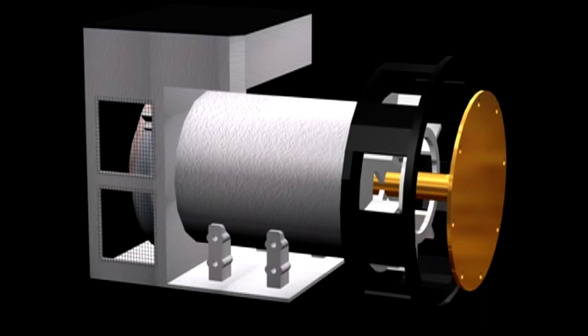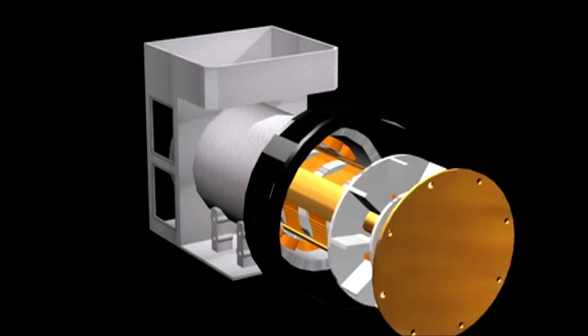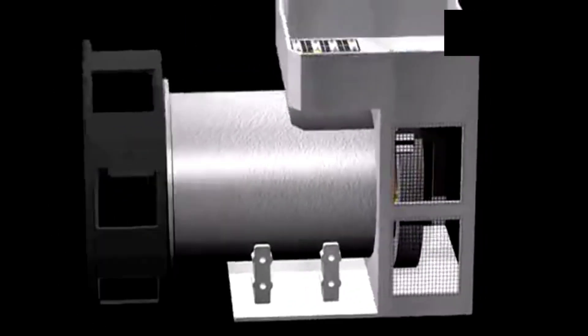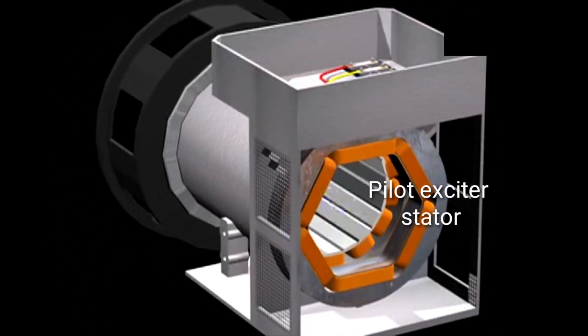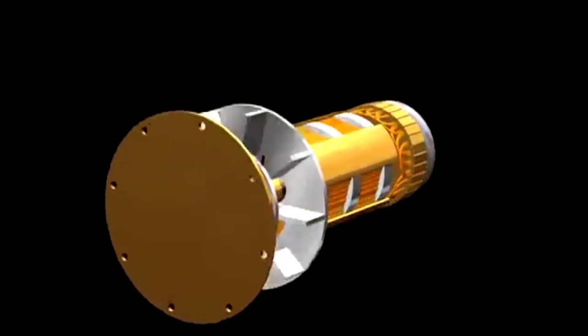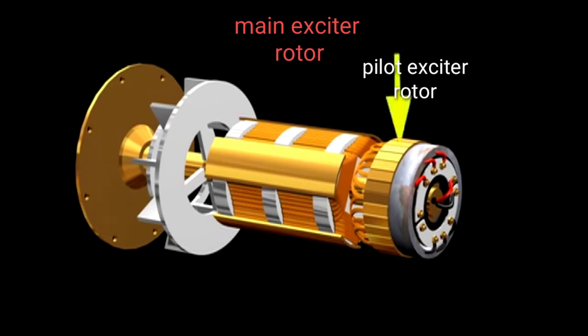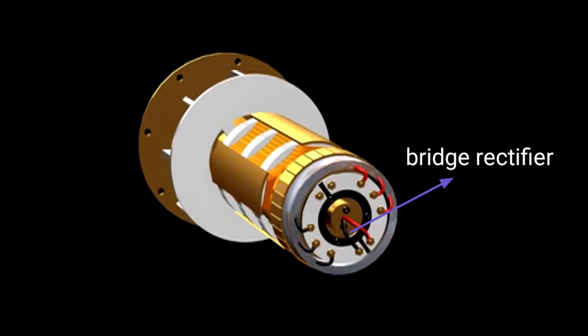This is the rotor assembly. The stator body houses a main stator and the exciter. Similarly, the rotor assembly consists of a main rotor and the exciter, along with a bridge rectifier assembly mounted on a plate attached to the rotor.